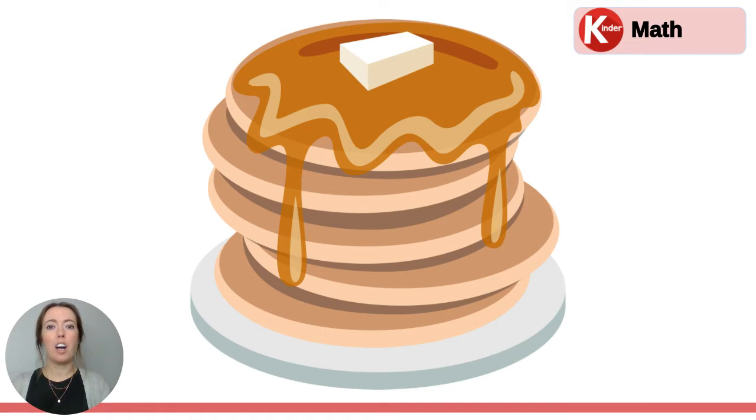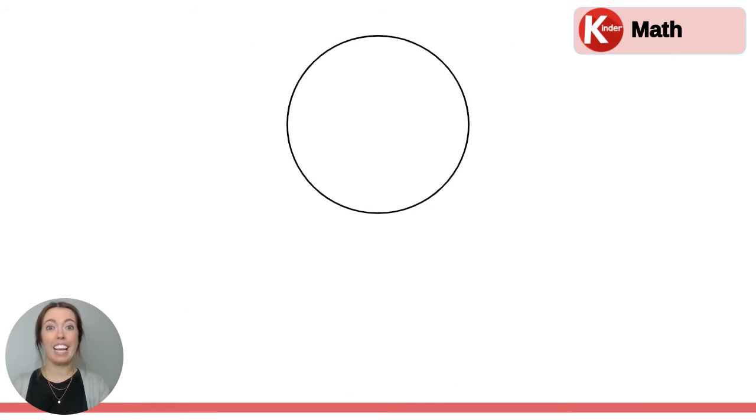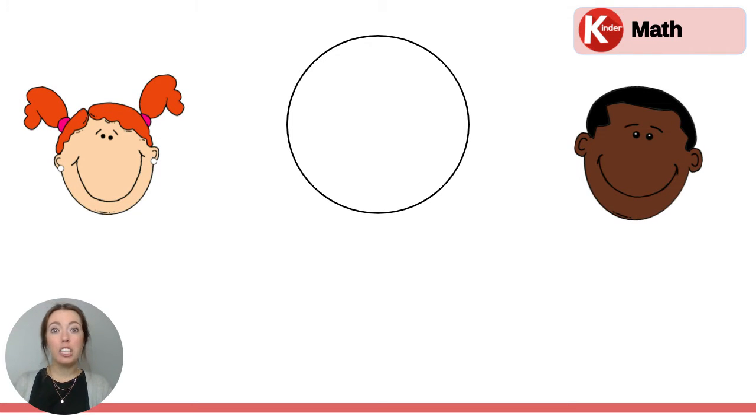Today we're going to talk about one pancake here in our first example, and there are two friends that want to share this pancake. They want to share it evenly so they both get the same amount. Let's look at that circle pancake. Can you think of a way they could split this pancake in half so they both get the same amount?